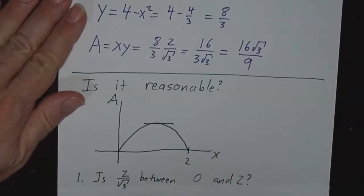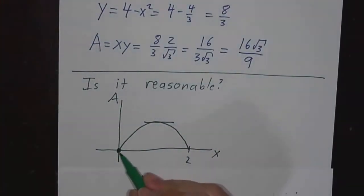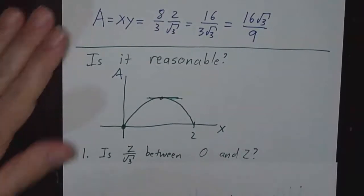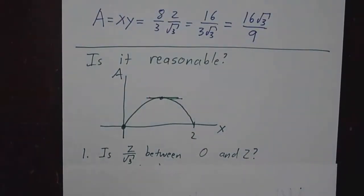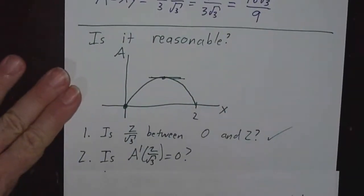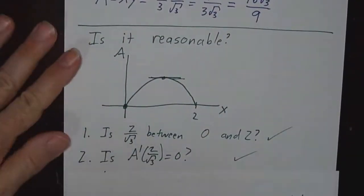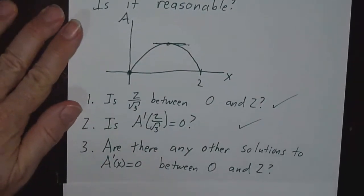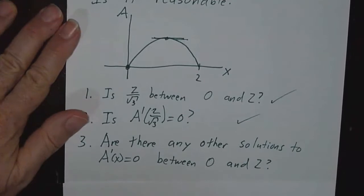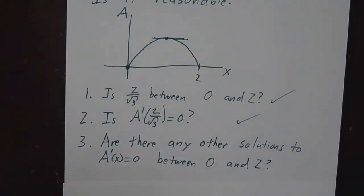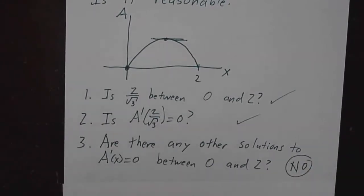Now, is that reasonable? Well, if we took x equals 0, we would have no area, because that would be 0 width. If we took x equals 2, we'd have no area, because that would be 0 height. The maximum is somewhere in the middle. And at the maximum, the derivative has to be 0. So is the number we got between 0 and 2? Yep. Is the derivative 0? Yep. Are there any other points? No. So this is the only possible candidate for our maximum. And so this is, in fact, our solution.